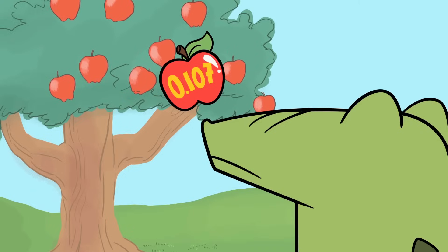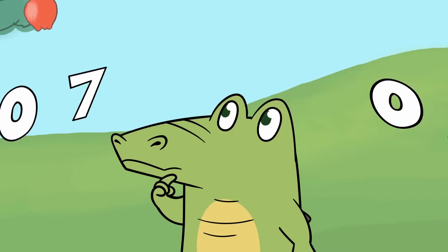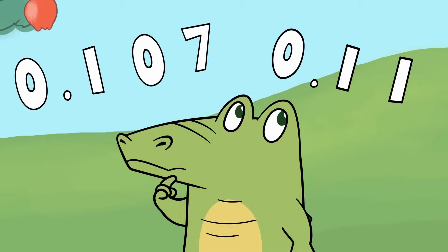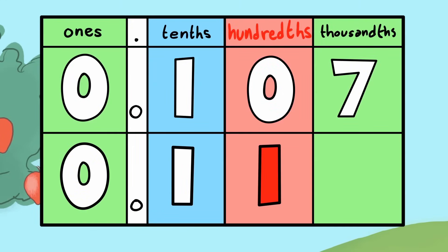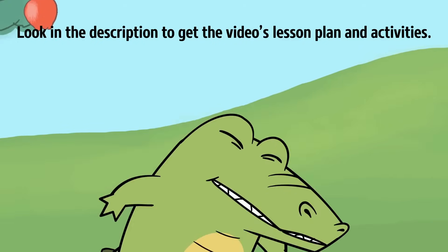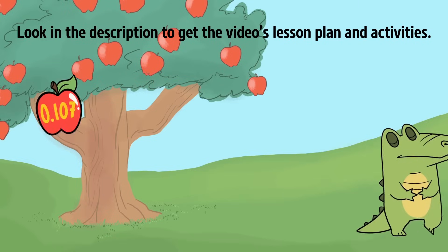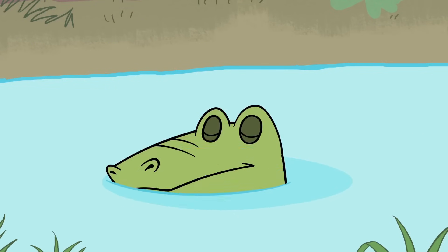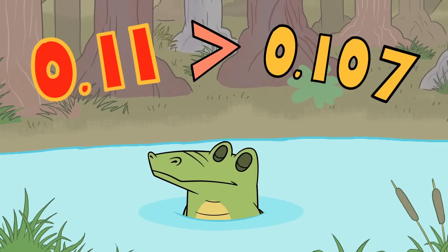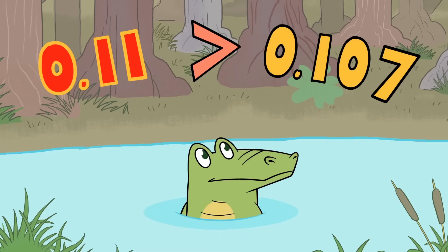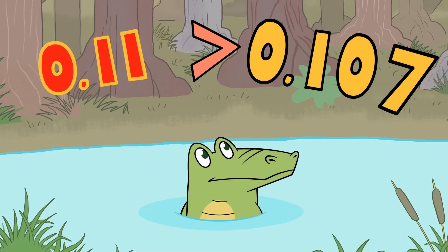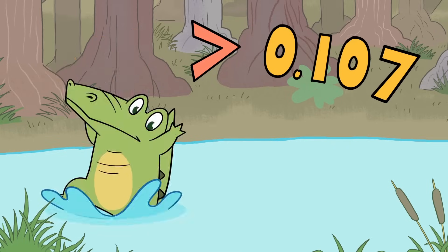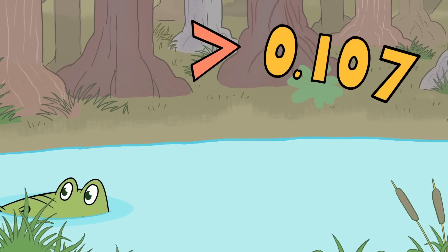107,000ths and 1,100ths. The greater value is what the alligator gets. He looks at the place values from left to right — the greatest hundredths place — so he takes a big bite. The hungry alligator eats the value that is greater; the value that is least is never part of his feast.